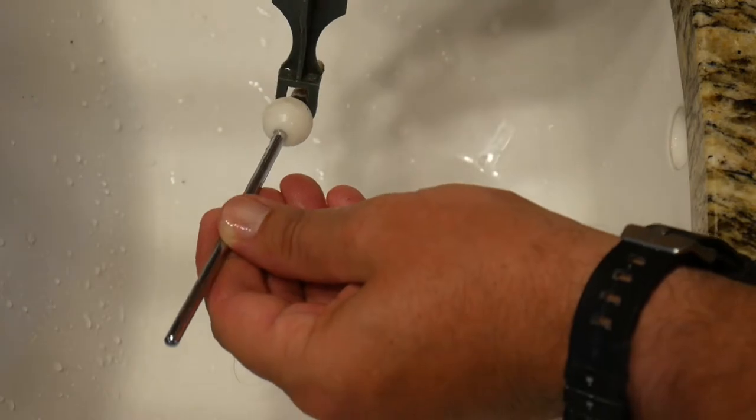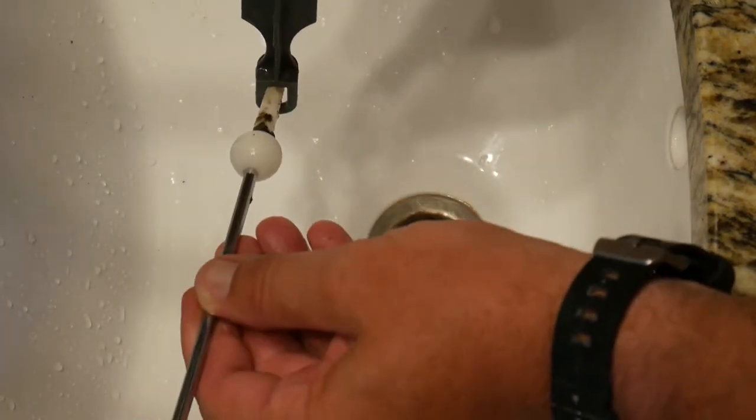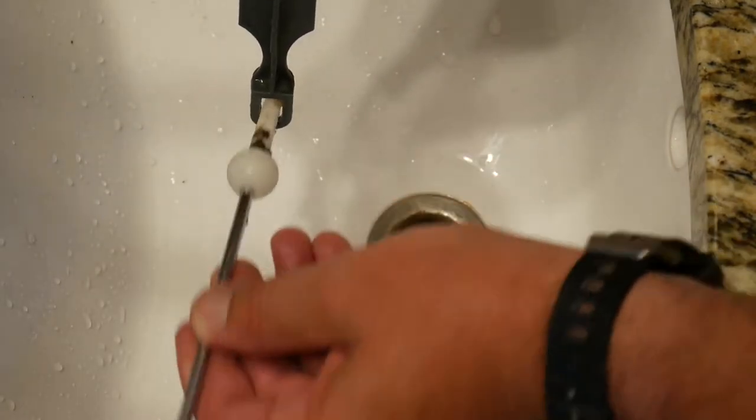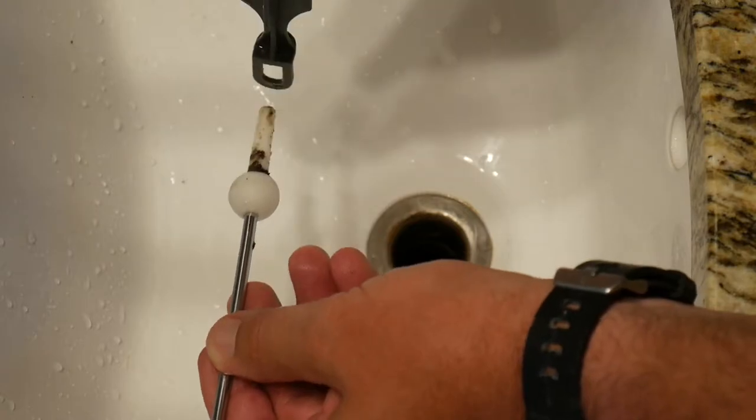Let's get this thing put back together. You can see how when these are lined up in the pipe, the stopper is going to be down, then the operating rod goes in and goes through this hole, and then as you move the lever up and down it moves the stopper up and down. Pretty simple. Let's get them into the pipe and lined up.